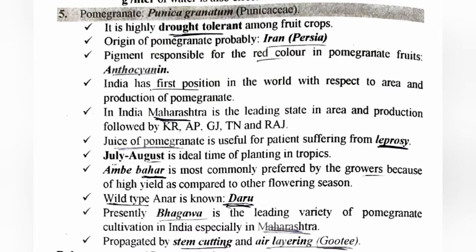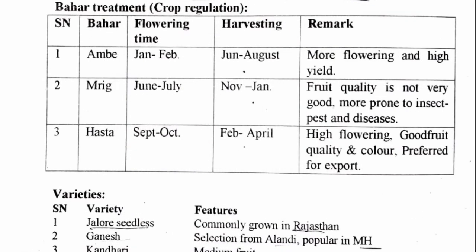Presently, Bhagawa is the leading variety of pomegranate in India and it is mostly grown in Maharashtra. Propagation is done by stem cutting and air layering (goti). The three seasons we will look at are Ambe bahaar, Mirig bahaar, and Haste bahaar — these are for crop regulation.